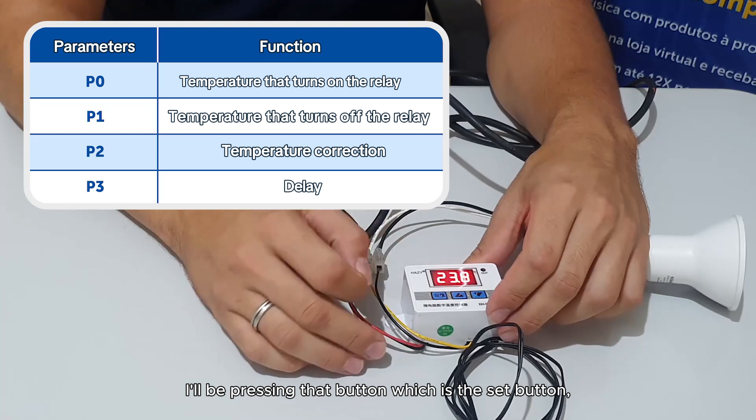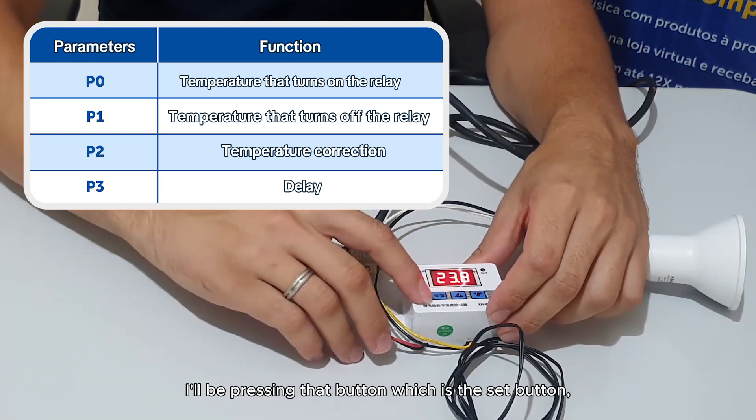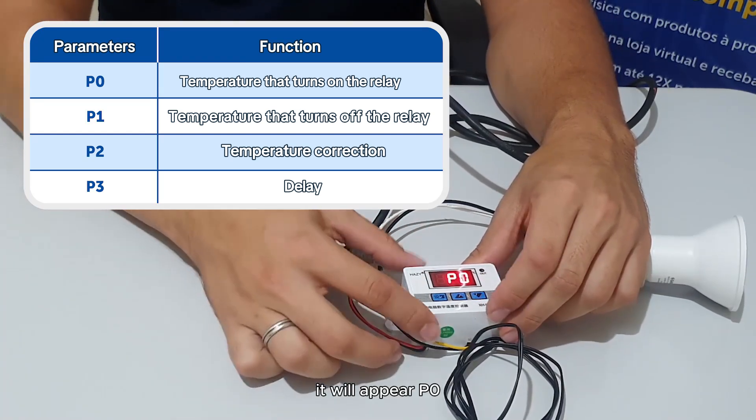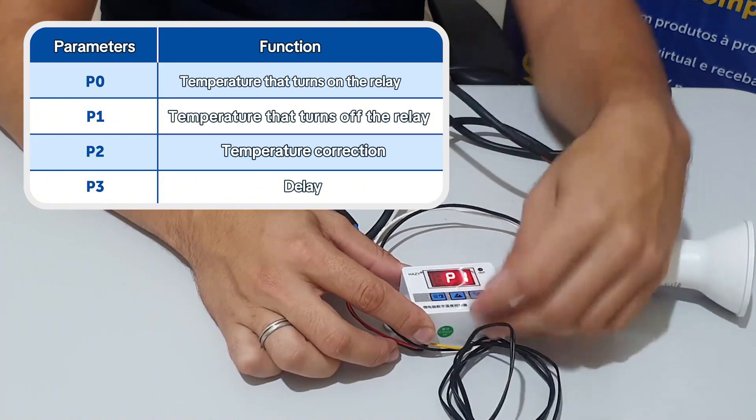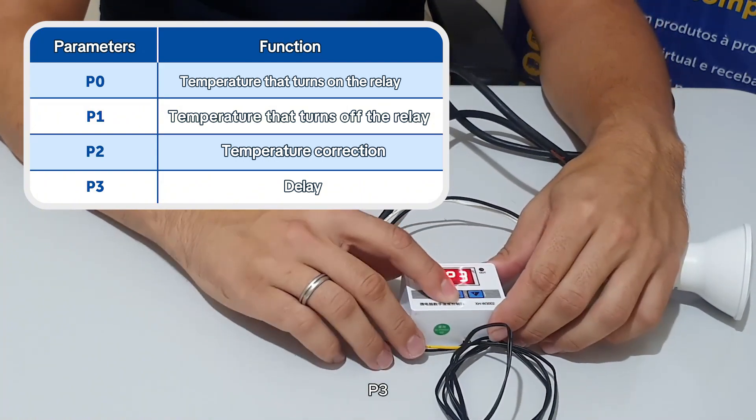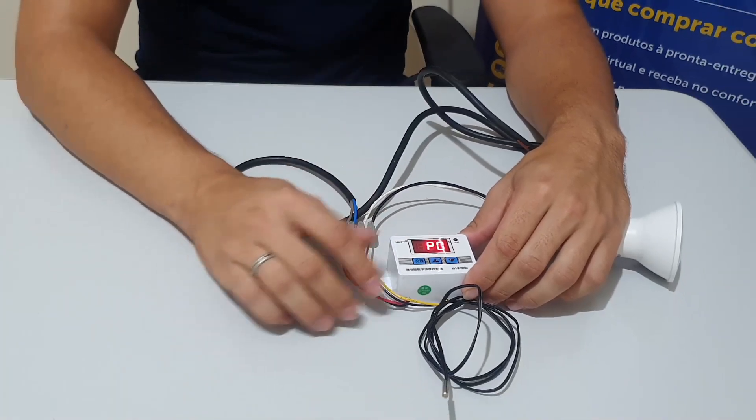Here how does it work? I'll be pressing that button which is the set button. It will appear p0, p1, p2, p3, then p0 again. What happens?